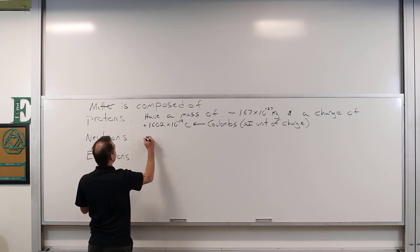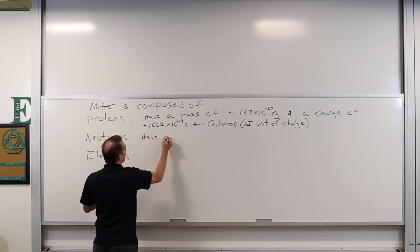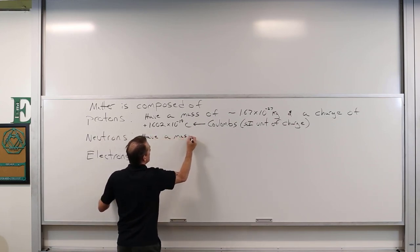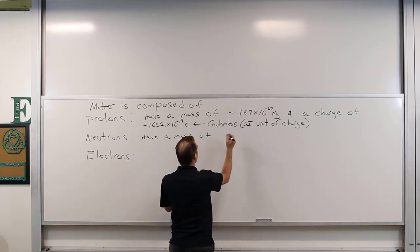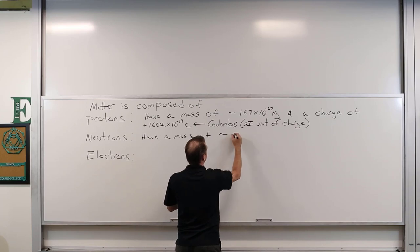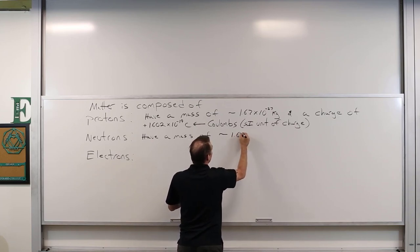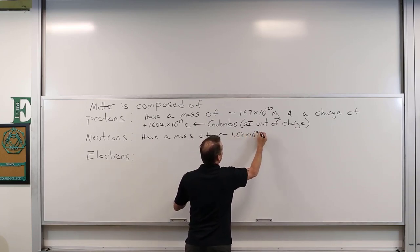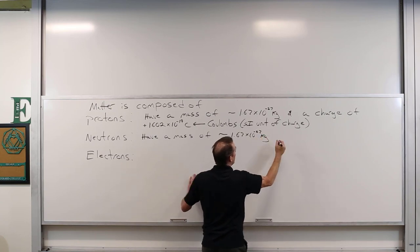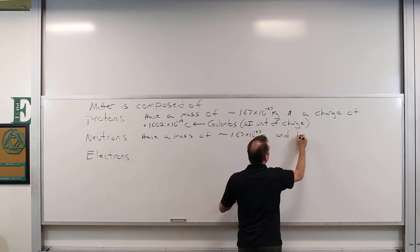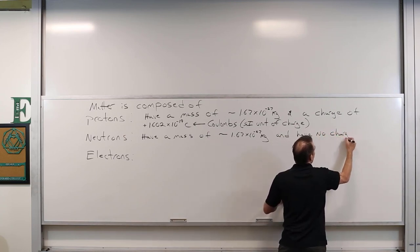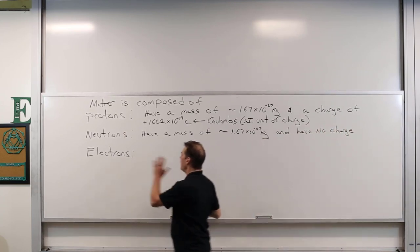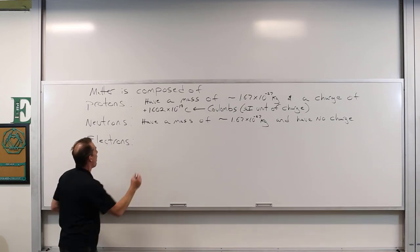Neutrons have a mass just about the same as a proton — to three significant figures it's basically the same, 1.67 × 10⁻²⁷ kilograms — and they have no charge. Then we have electrons.